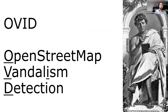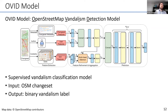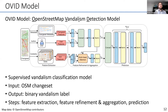For that purpose, we introduce our OVID model, which stands for OpenStreetMap Vandalism Detection Model. This is a supervised classification model that takes as input an OSM changeset and outputs a binary vandalism label. The individual steps consist of feature extraction, feature refinement and aggregation, and finally prediction.